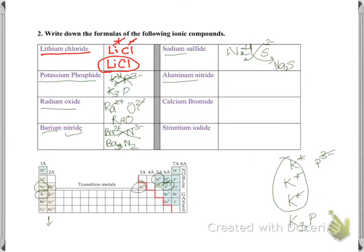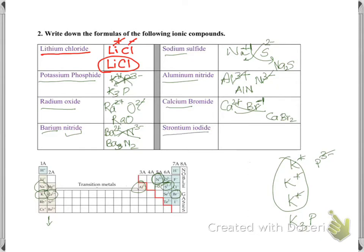Aluminum nitride: aluminum is in the third A group, three plus charge. Nitrogen is in the fifth A group, three negative charge. Three plus cancels with three negative, so the formula is AlN. Calcium bromide: calcium has a two plus charge. Bromine is in the seventh A group, one negative. To cancel two plus you need two bromides. Swapping the numbers: calcium gets one (no subscript written) and bromine gets two, giving CaBr2. Strontium iodide: strontium is in the second A group, two plus. Iodide is one negative. Swap the numbers — the formula is SrI2.